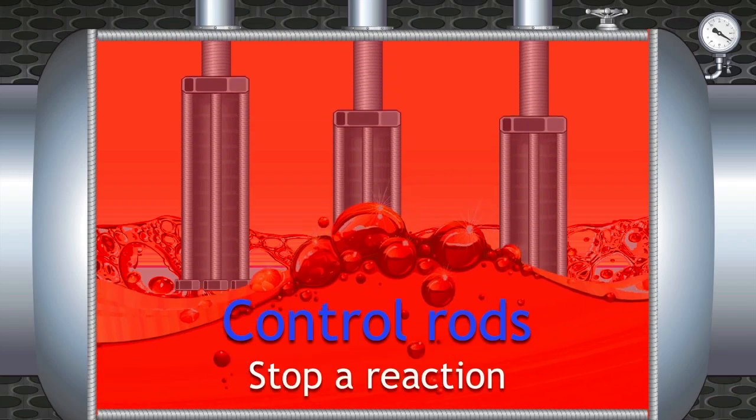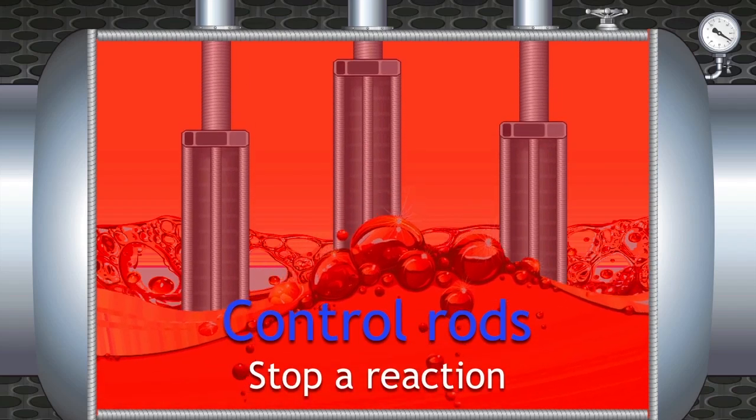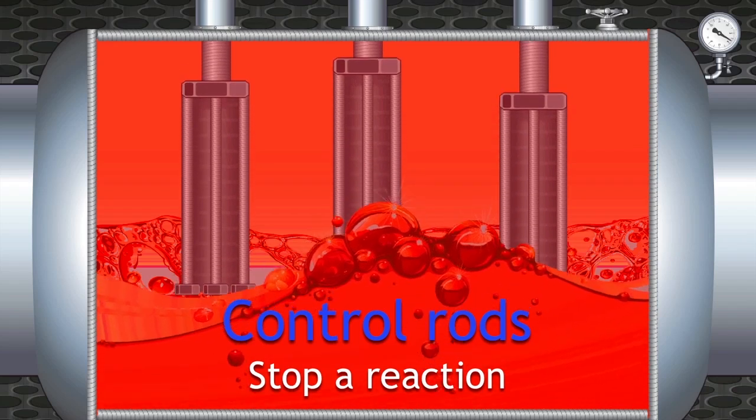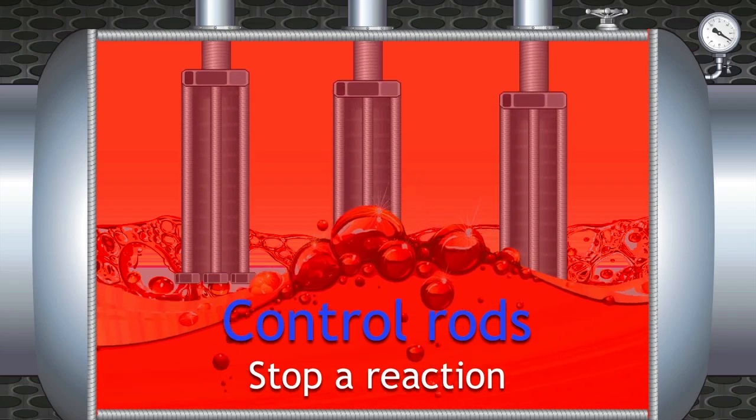When lowered, these control rods stop the reaction if necessary. They are built and positioned in a way that ensures they drop into the fuel in the case of an emergency such as a power cut.